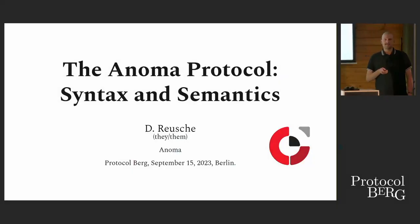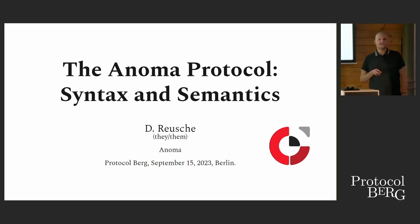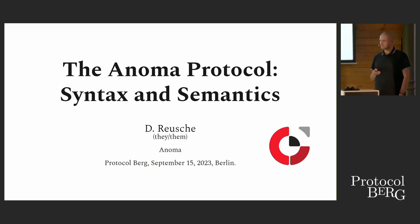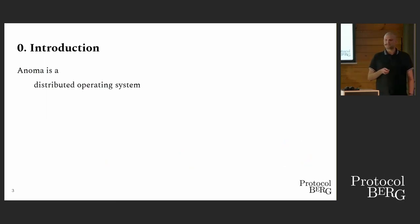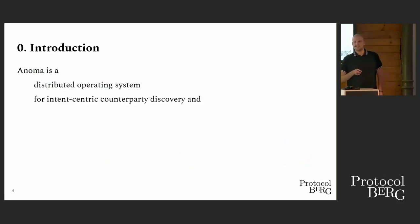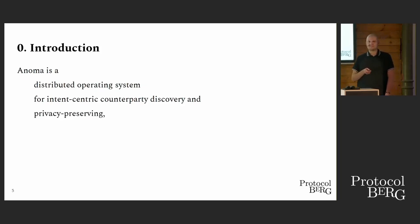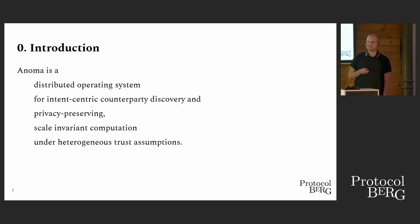Hi, I'm D. I'm with Anoma and we're building this protocol. So basically, what is Anoma? Anoma is a distributed operating system for intent-centric counterparty discovery and privacy-preserving scale-invariant computation under heterogeneous trust assumptions.